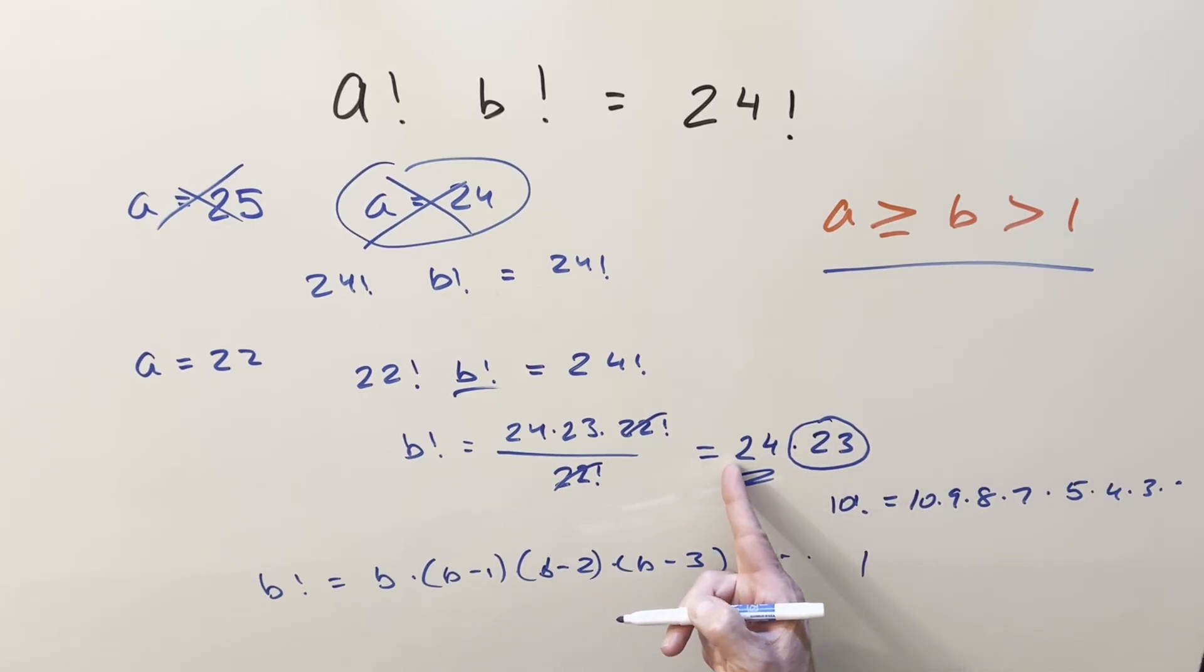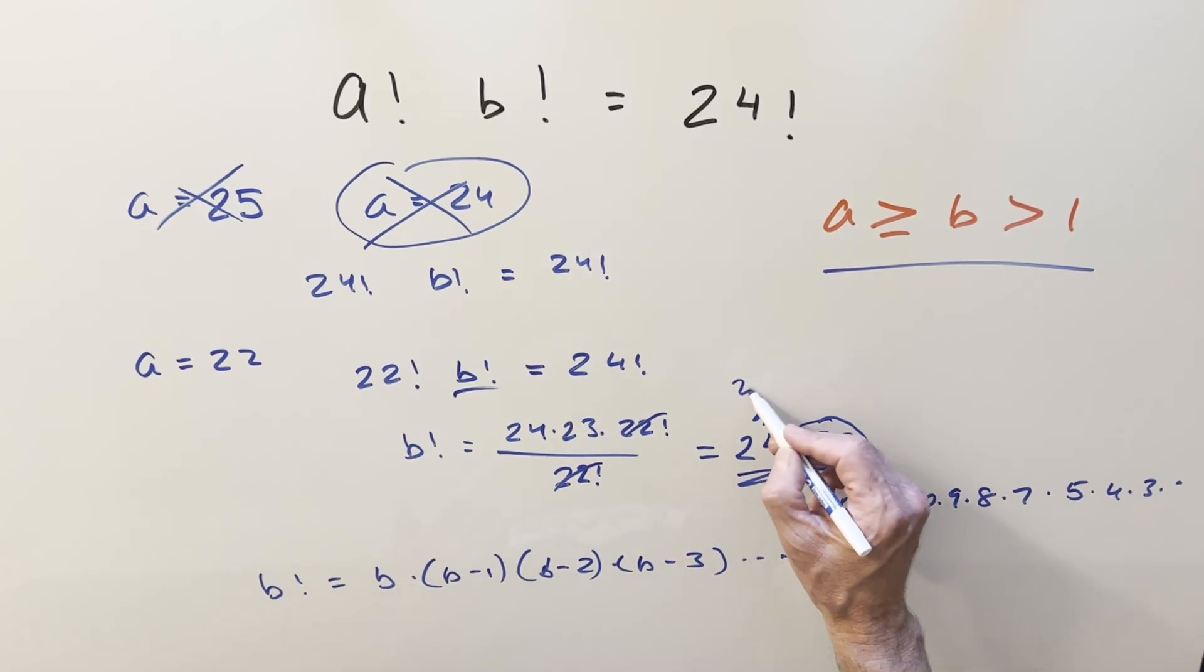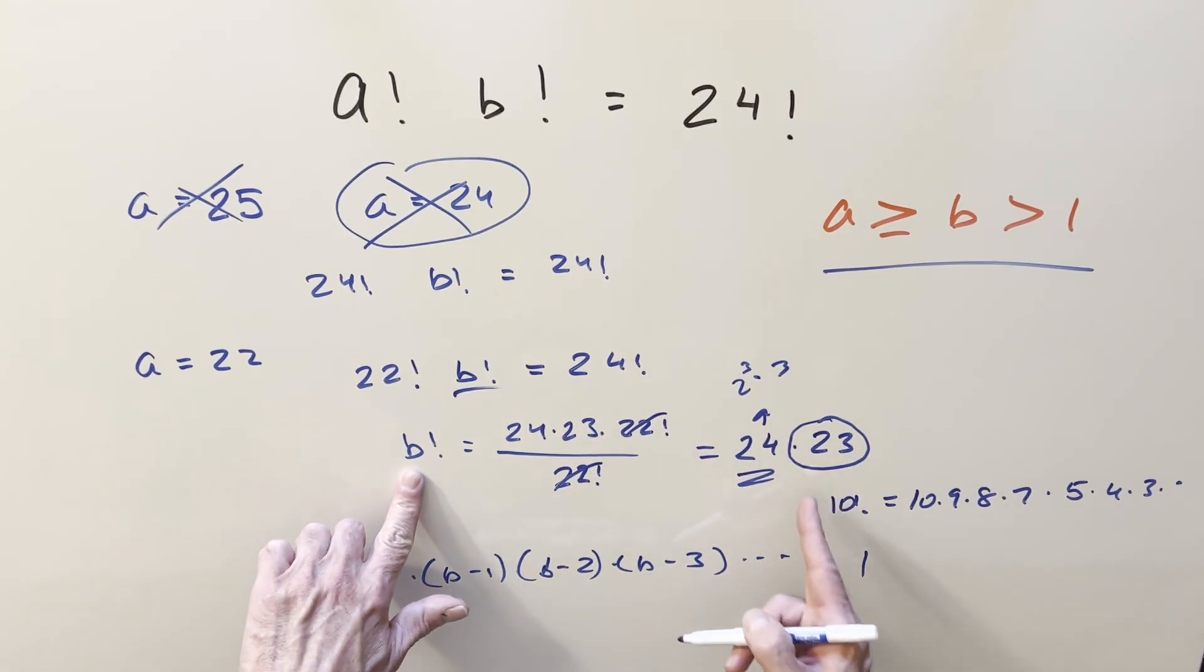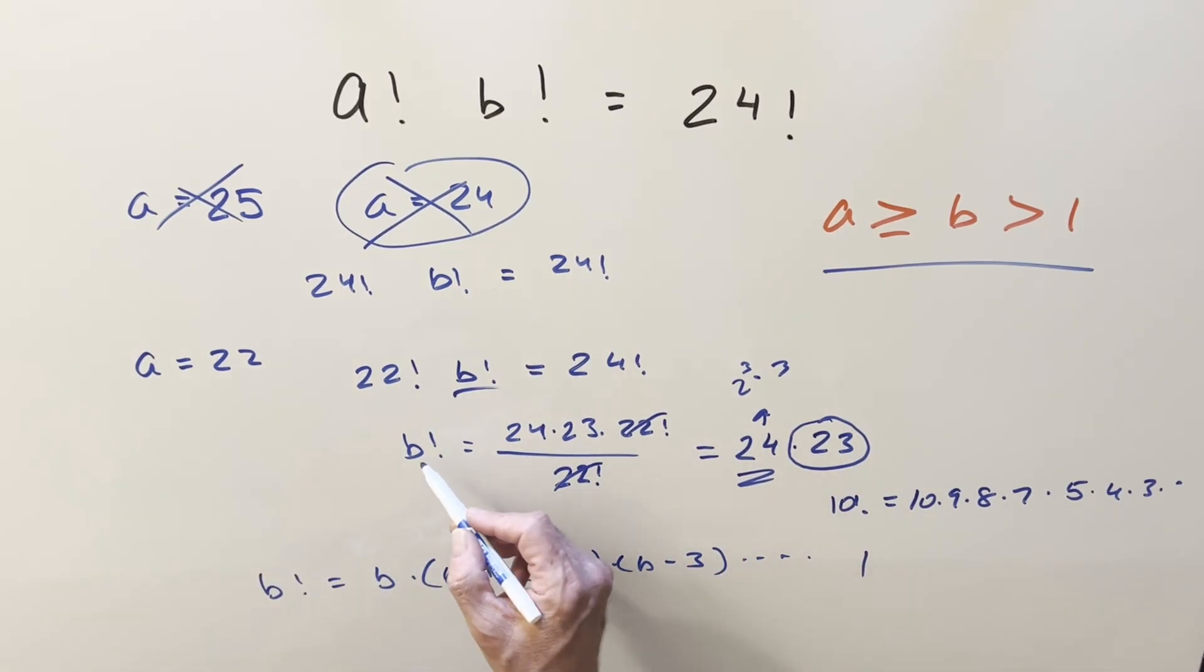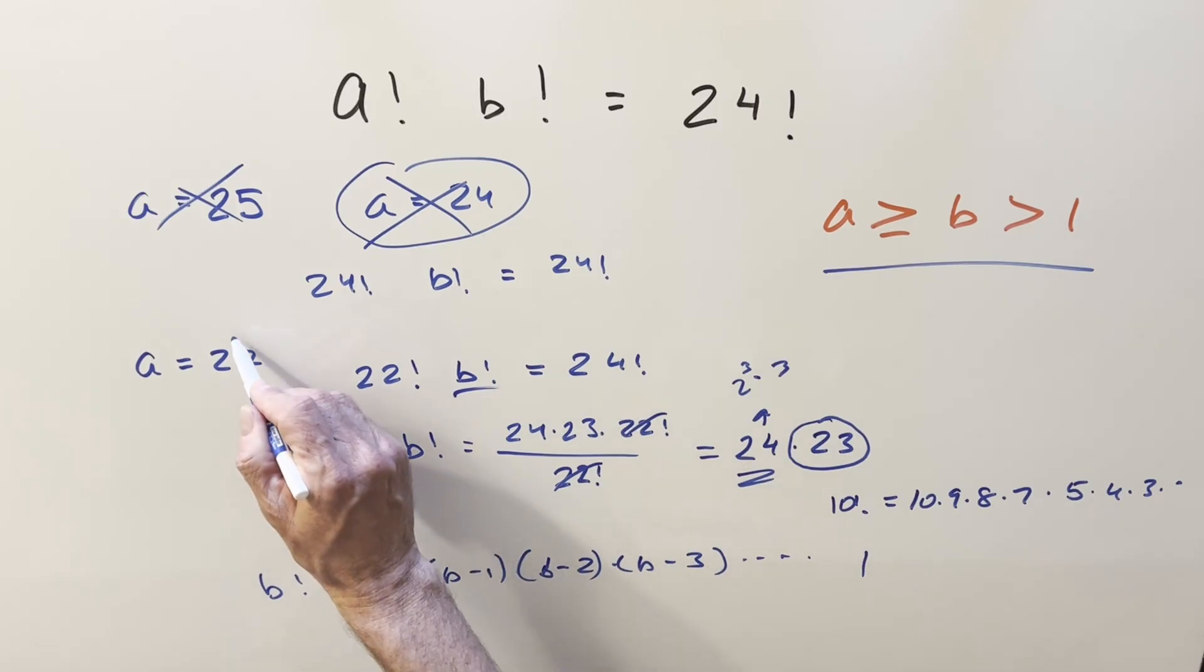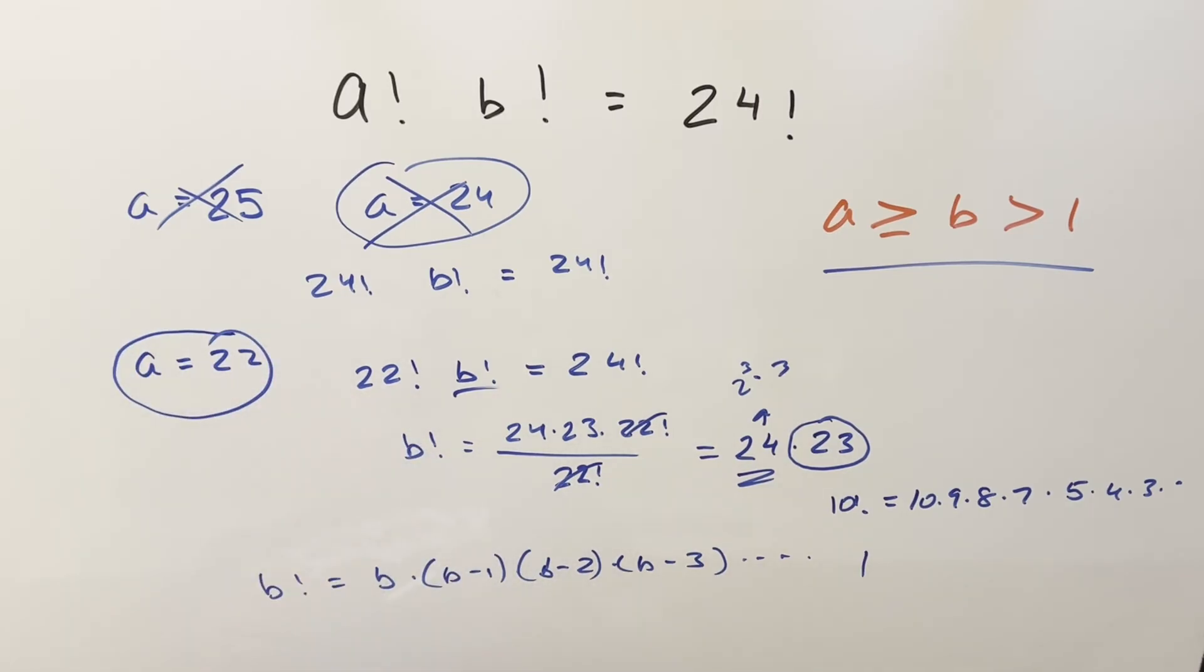But it clearly doesn't. We've got no, I mean, in here we have 2s and 3s, but we don't have 7, 11. We have, in 24, we have, in 24, it factors as 2 cubed times 3. So we have 2 and 3, but we don't have 5, 7, 11, none of the other stuff. So this is actually not possible for b factorial. So we can also throw out this a equals 22 case.